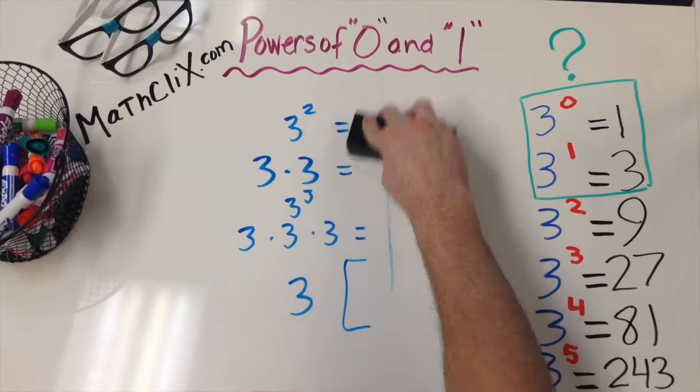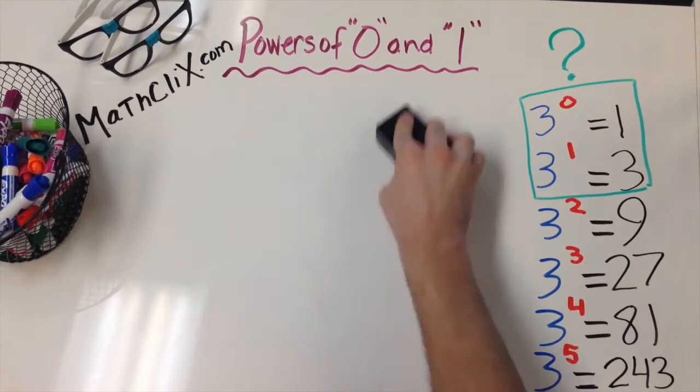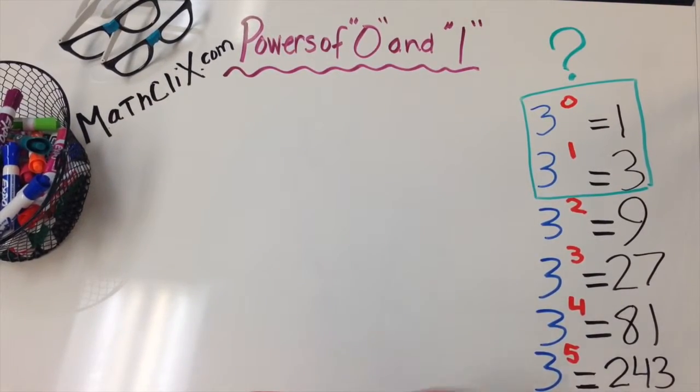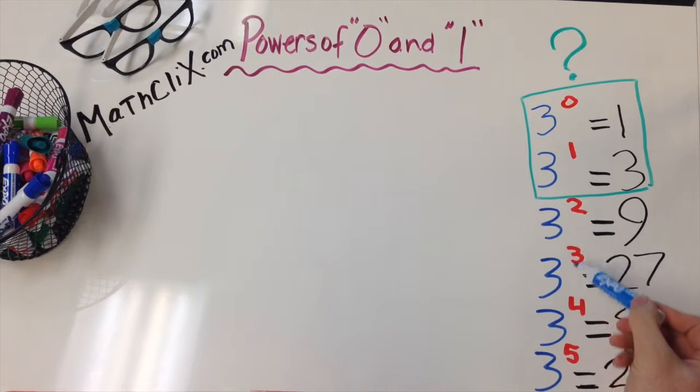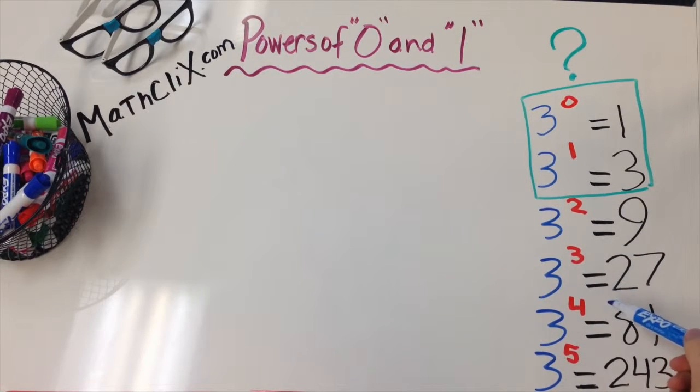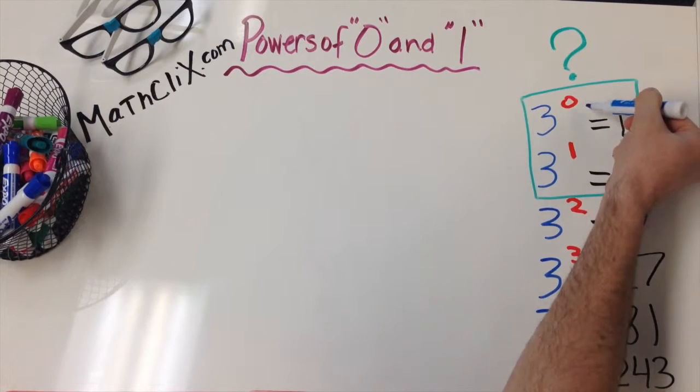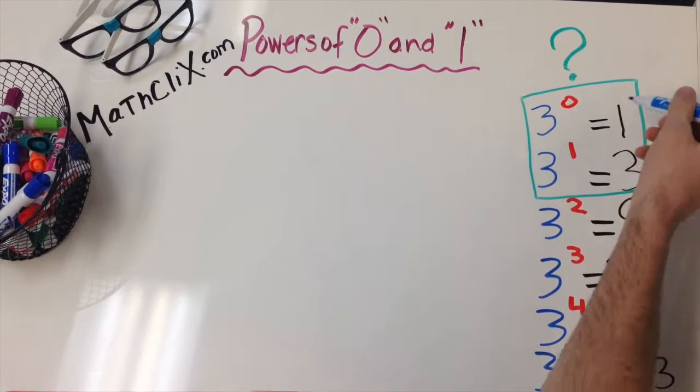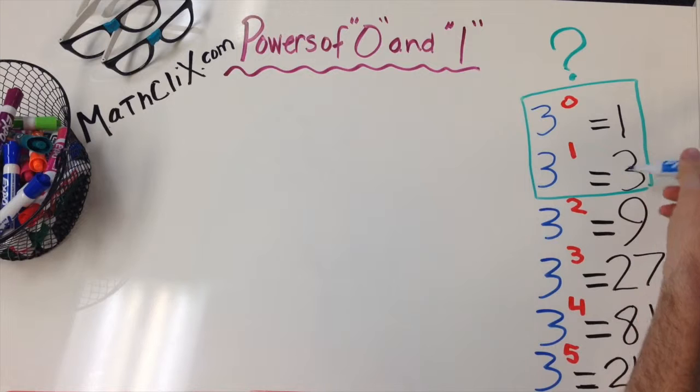Well, somebody a whole lot smarter than me a long time ago figured out a simple thing about multiplying similar bases with different powers. I will now use this to explain why 3 to the 0 equals 1, and 3 to the 1 equals 3.